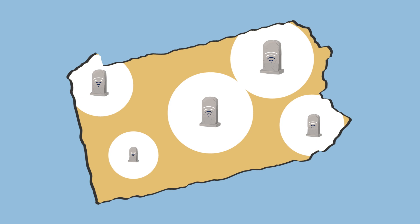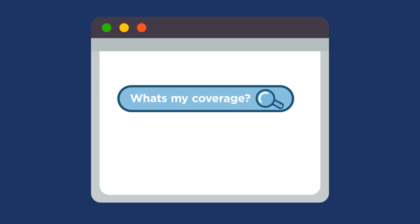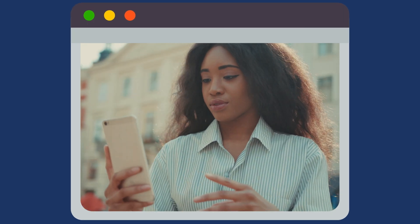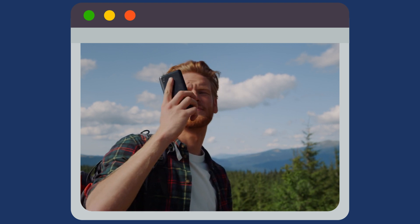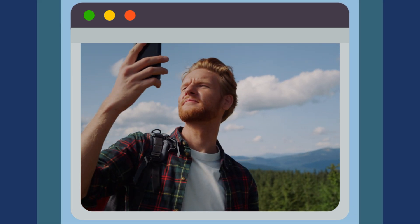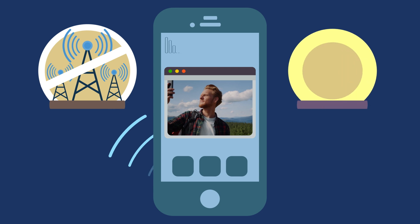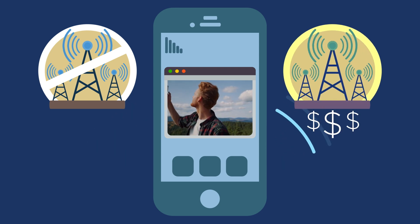You can check independent consumer websites, which may help fill gaps in coverage information. If you're not able to send or receive a usable phone signal, roaming may occur automatically, or you may be able to turn it on manually. Instead of having a call blocked or dropped, your phone could use another provider's cell site, which may result in an additional cost to you.